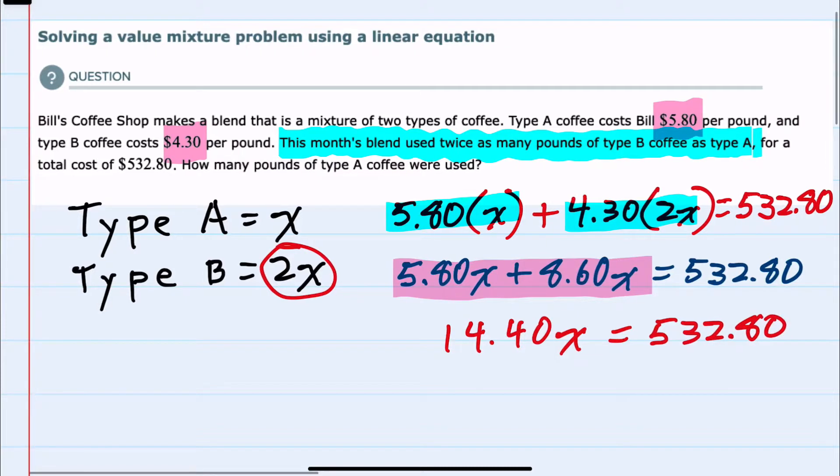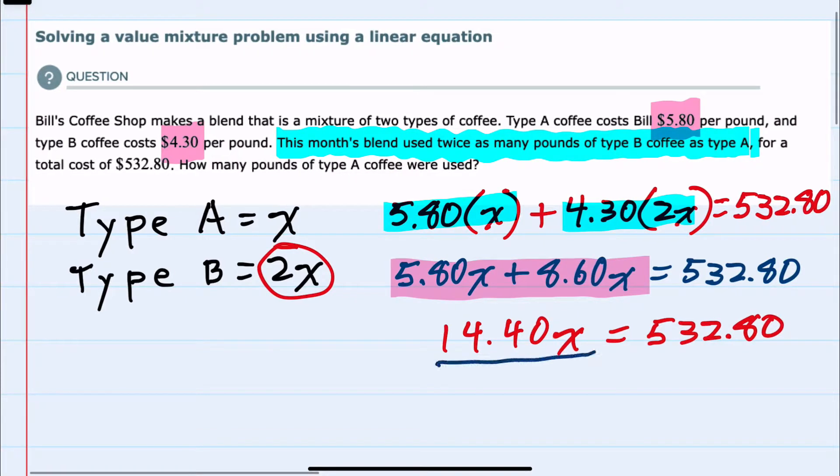And then lastly, to isolate the x, we would divide both sides by $14.40. On the left-hand side, the $14.40s cancel, leaving me with just the x.